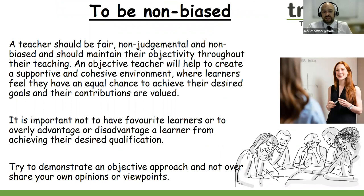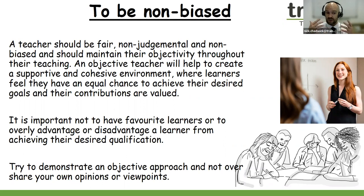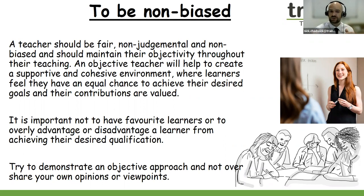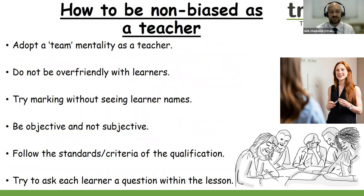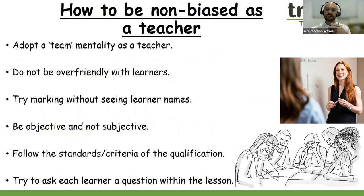Another key responsibility is to be non-biased as a teacher — to remain objective, not to have favourite learners, and to support all learners so they feel they are on a level playing field. Create an atmosphere where all learners can achieve and where no learner feels a teacher is being subjective. Try to remain objective and fair with all learners, not disadvantaging any learner or over-advantaging others. You can adopt a team approach using buzzwords like 'we can do this together' — this moves away from subjectiveness.